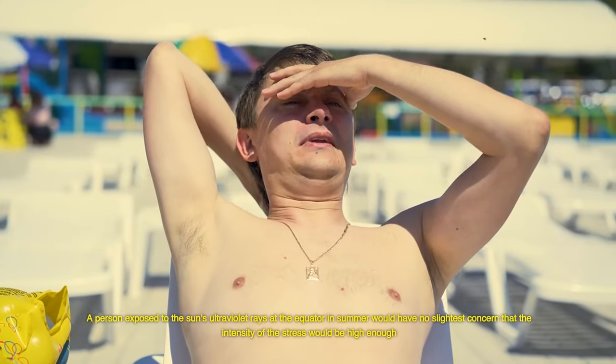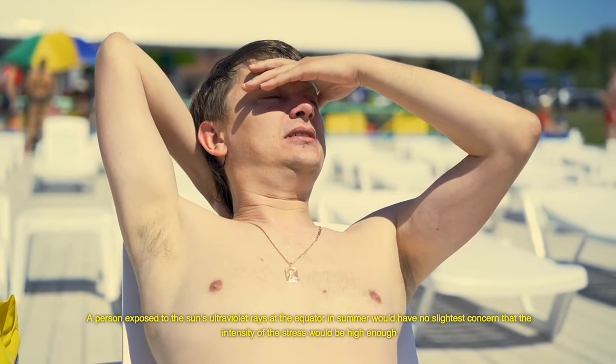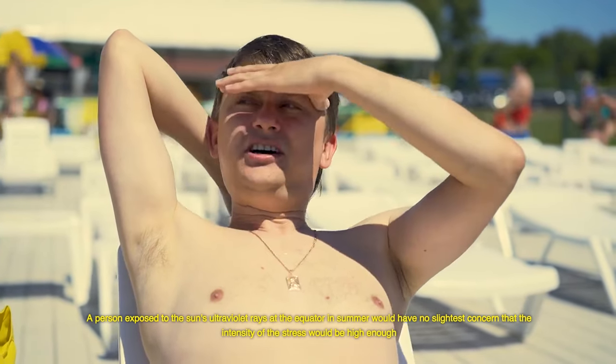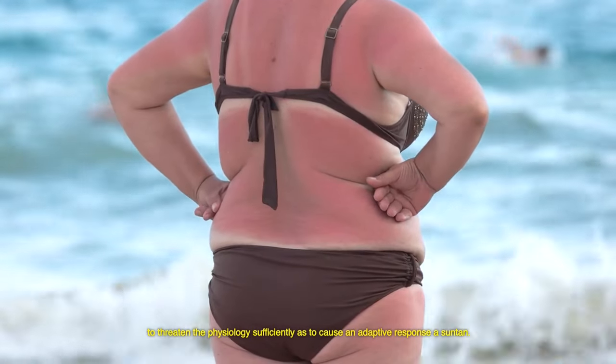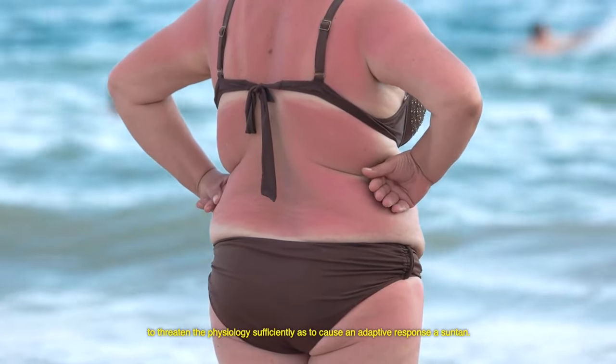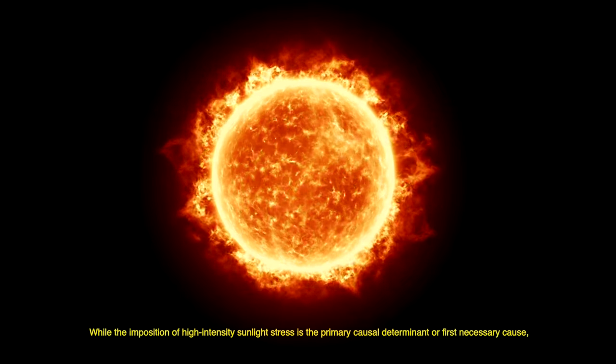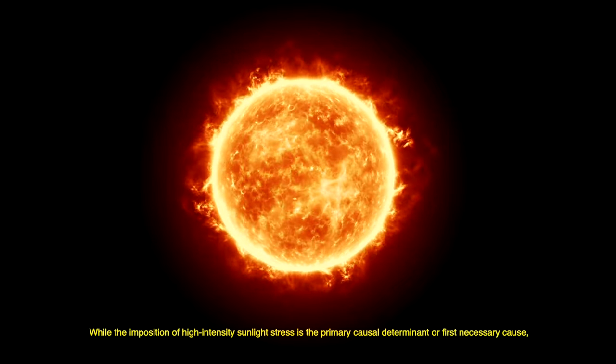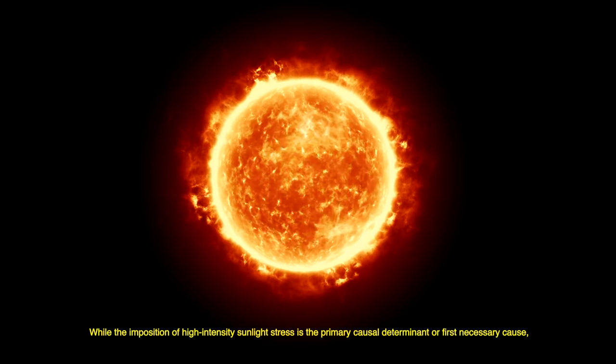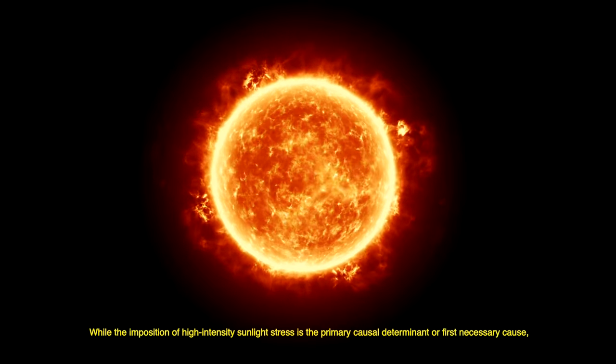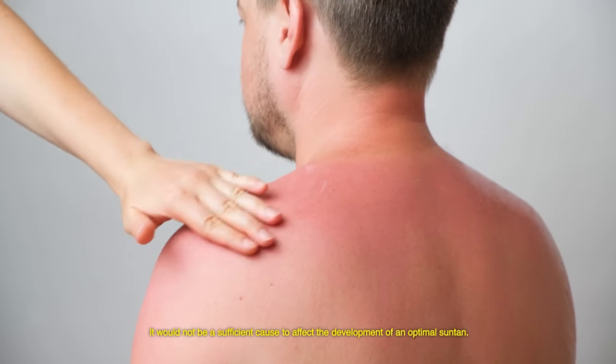A person exposed to the sun's ultraviolet rays at the equator in summer would have no concern that the intensity of the stress would be high enough to threaten the physiology sufficiently to cause an adaptive response, a suntan. While the imposition of high-intensity sunlight stress is the primary causal determinant, or first necessary cause, it would not be sufficient cause to affect the development of an optimal suntan.